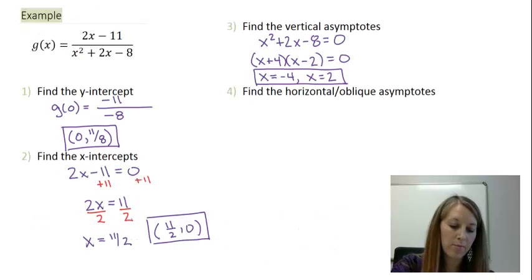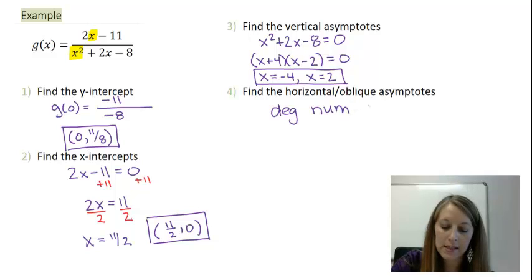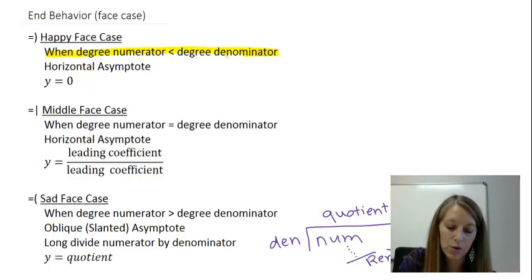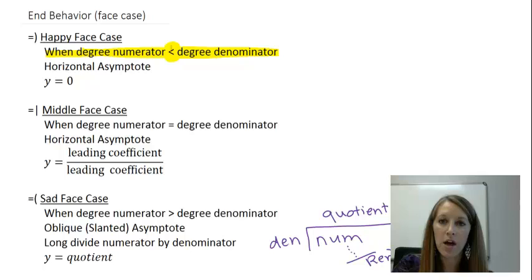The degree of my numerator is actually a first degree, and the degree of my denominator is actually a second degree. In this case, the degree of my numerator is less than the degree of our denominator. That tells us that we are in happy face case, because the degree of our numerator is less than the degree of our denominator.